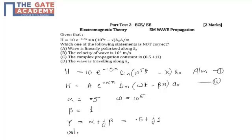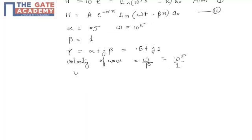Now, velocity of wave is nothing but omega upon beta. That is 10 to the power 5 upon 1. So, it is 10 to the power 5 meter per second. And, the direction of wave will be X direction.